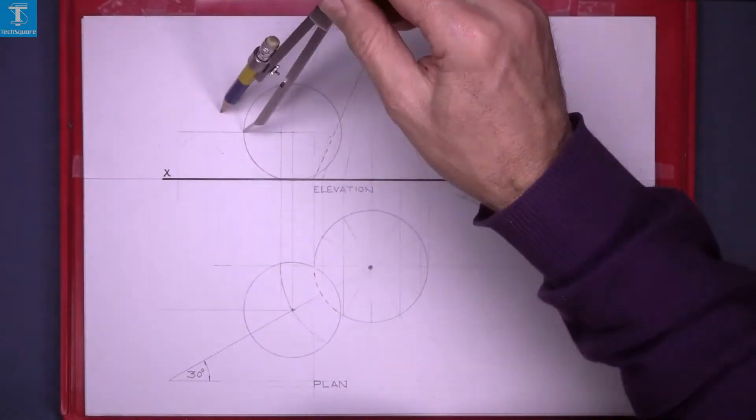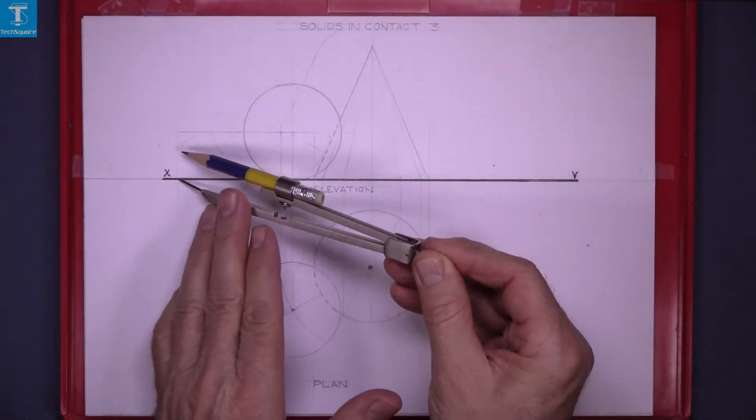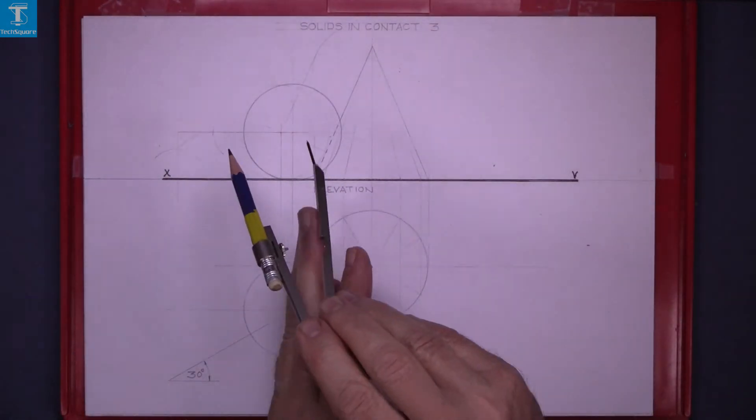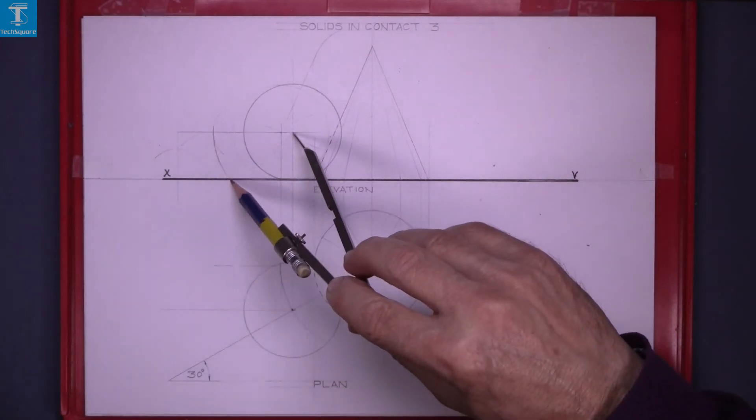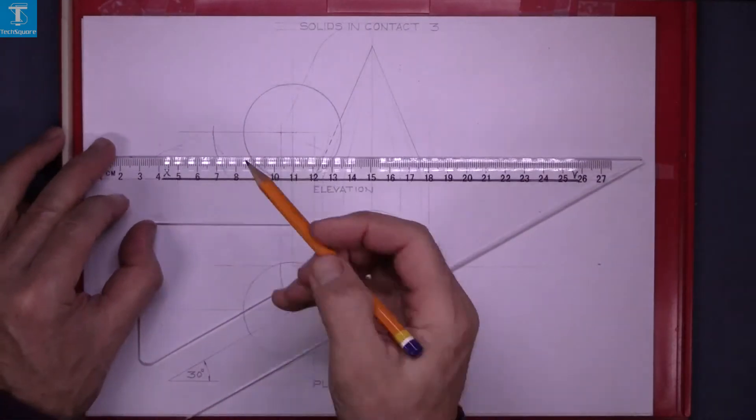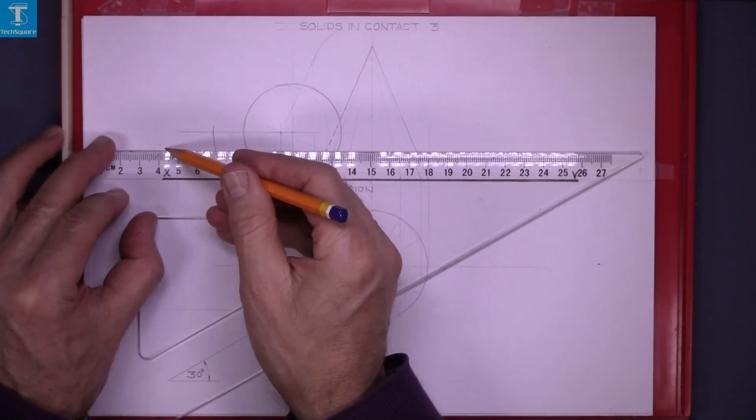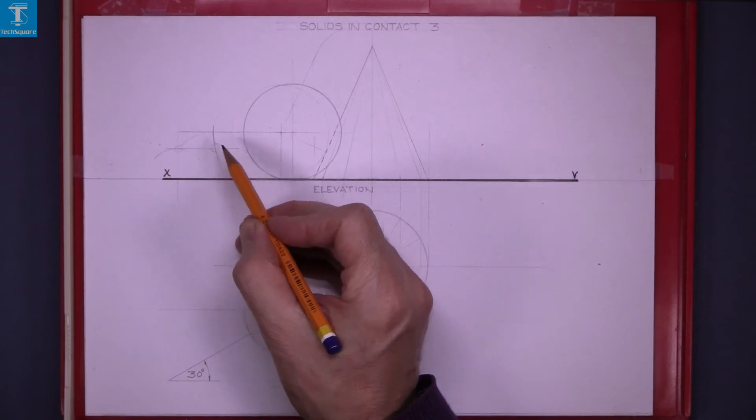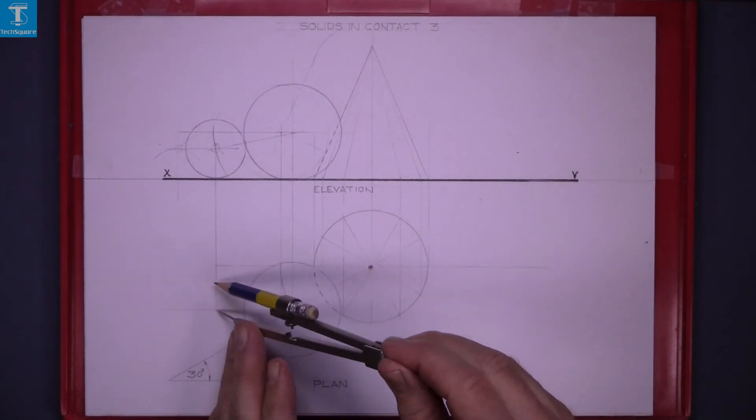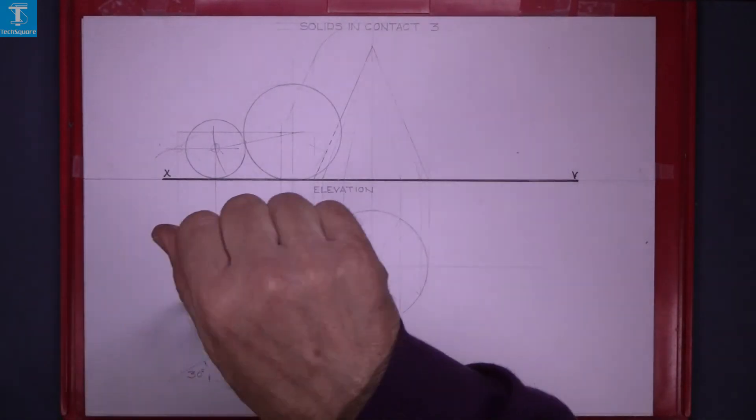So, as in Solids in contact 2, find the centre for the new sphere. Find the points of contact and draw in your sphere, now that's the plan of it there in that position.